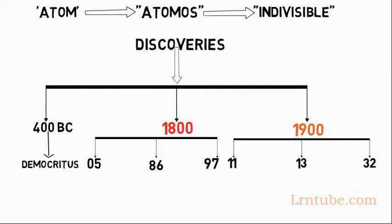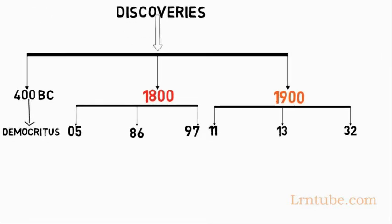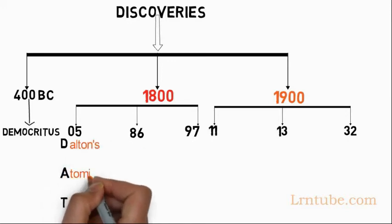This arrangement helps you understand the dates and discoveries easier. For 1805, DAT represents Dalton's Atomic Theory. In 1805, John Dalton put forth the atomic theory.